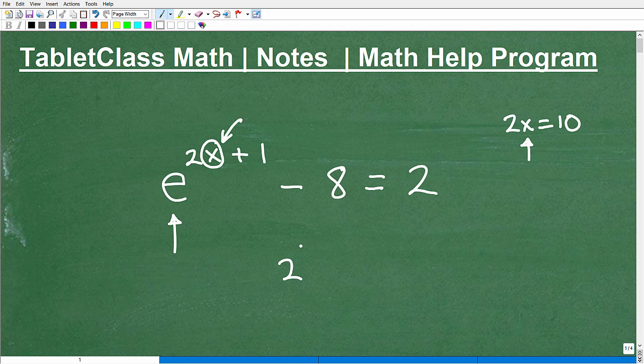But this particular type of equation is called an exponential equation because the variable is located in the exponent. So for example, if you have, let's say, 2 to the fourth power, this is a power, 2 is the base, and 4 is the exponent.